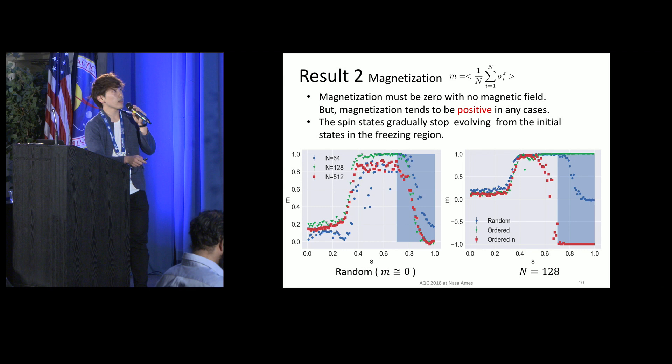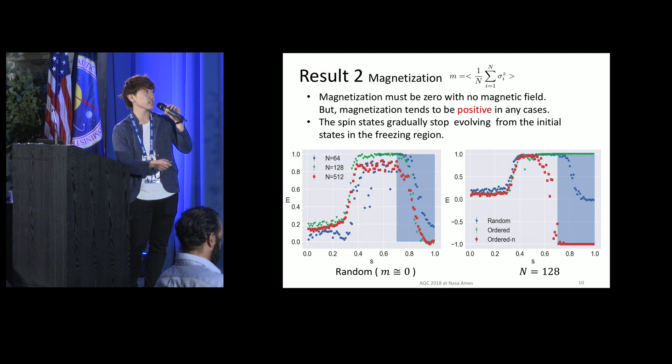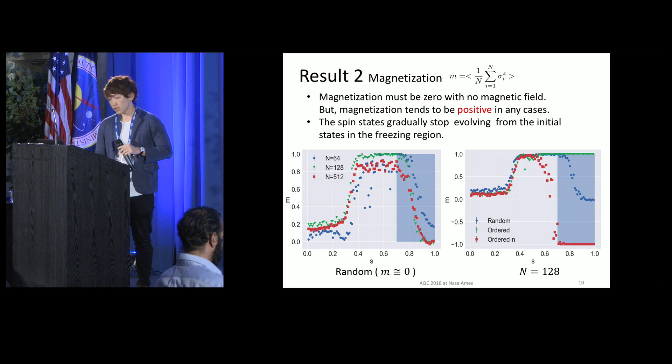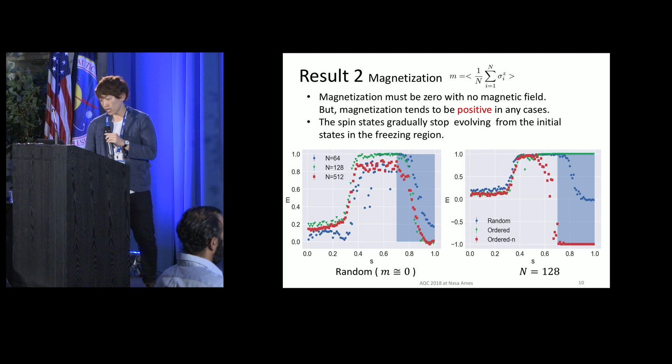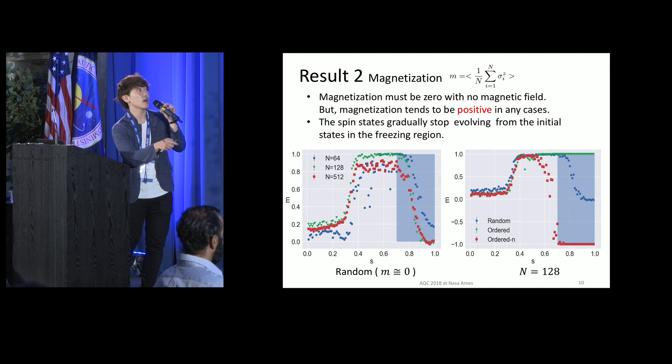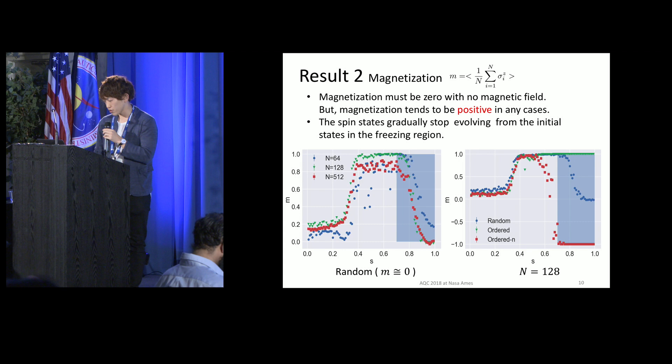The right figure shows the effect of the initial value. The blue point is initialized randomly, the green is initialized ordered, and the red is initialized ordered negative. In any initial state, the phase transition or freezing behavior happens. But we can see the red point is approaching from M equal minus 1 toward M equal 1. In addition, the positive bias is relatively strong but much weaker than the local magnetic field.